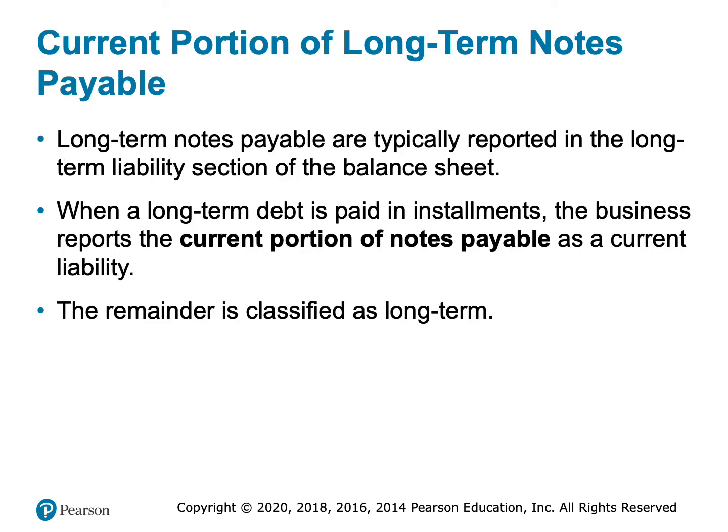We may have a note payable that is long-term but requires monthly payments, so a portion of it is due within the next year. For example, a 30-year mortgage is clearly long-term, but payments must be made over the next year. The portion due over the next year is classified as a current liability, and the remainder is classified as a long-term liability — so it's split into two parts.